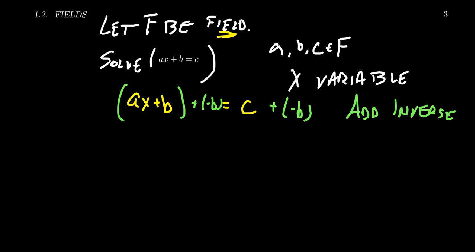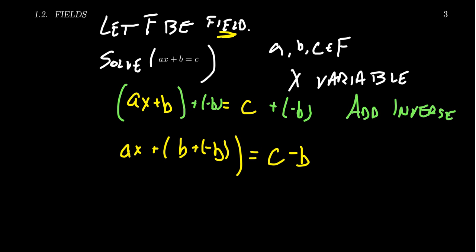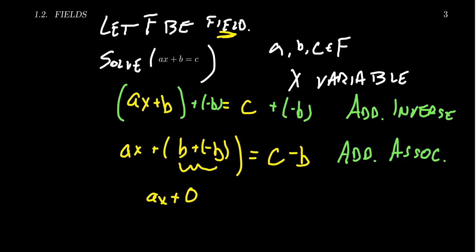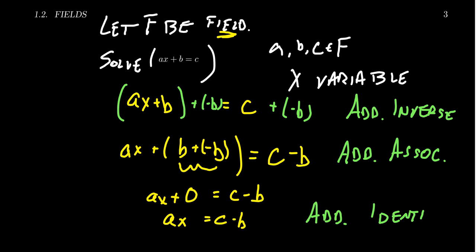Next, we reassociate — we move the parentheses on the left-hand side. By redoing the parentheses, we get AX plus B plus negative B on the left, and the right-hand side we simply get C minus B. On the left-hand side we used the additive associativity property. Then B plus negative B equals zero — that happens by construction — and adding zero to AX just gives us AX. We've now used the additive identity property. So you'll see we've used all the axioms of addition.